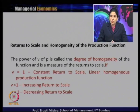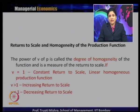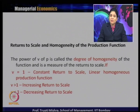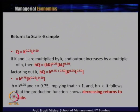When inputs change by proportion P and output becomes P^V times Q, the power V is the degree of homogeneity and a measure of return to scale. If V equals 1, constant returns to scale — also called a linear homogeneous production function. If V is greater than 1, increasing returns to scale because proportionate change in output exceeds proportionate change in input. If V is less than 1, decreasing returns to scale.